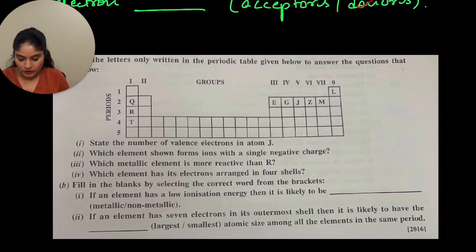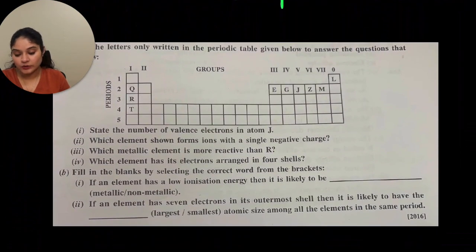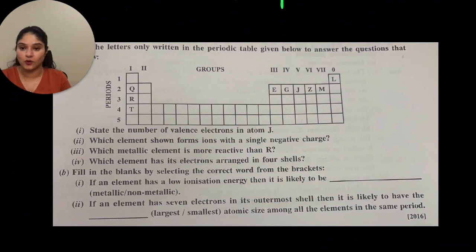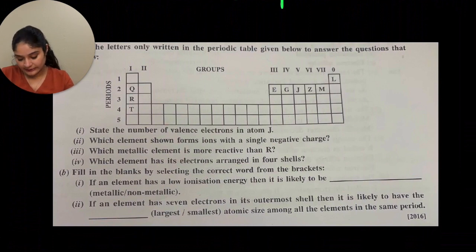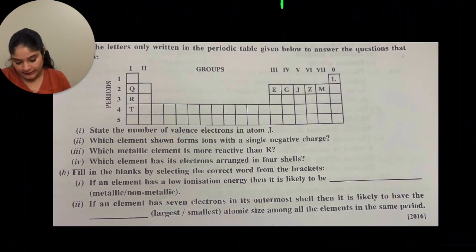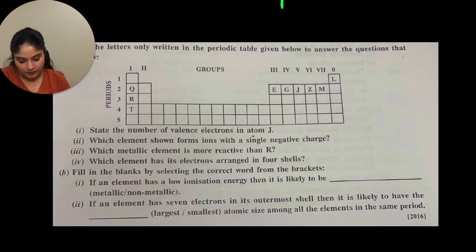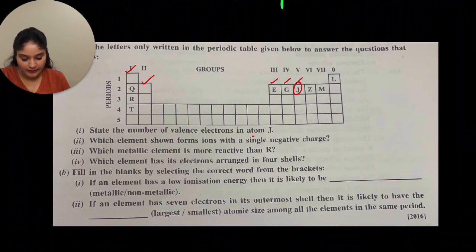Question 14: use the letters only in the periodic table given to answer the questions. State the number of valence electrons in atom J. J is in group — counting across: 1, 2, 3, 4, 5 — so valence electrons will be 5.